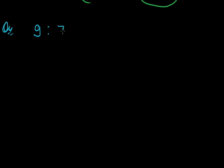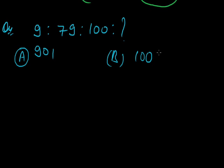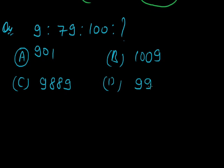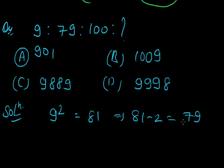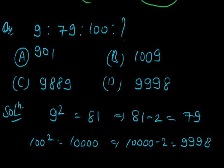Next question: 9:79::100:? Here option A, 901. Option B, 1009. Option C, 9889. Option D, 9999. Solution: 9 square is 81, then 81 minus 2 is equal to 79. As it is, 100 square is 10,000, and 10,000 minus 2, that is 9998. Answer is 9998.